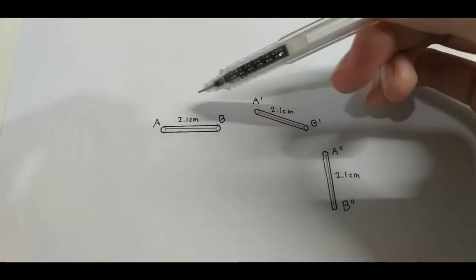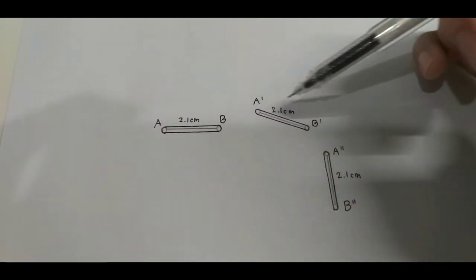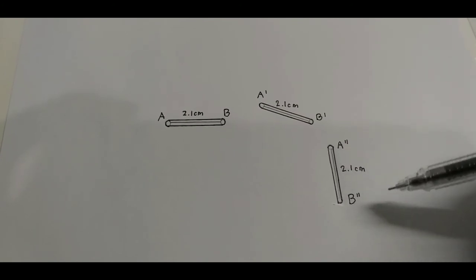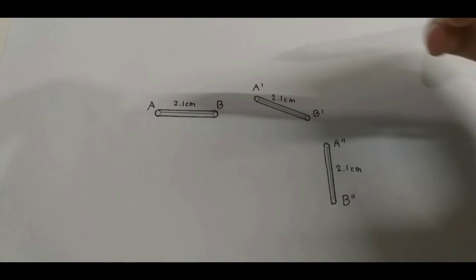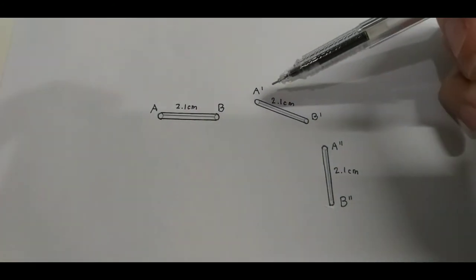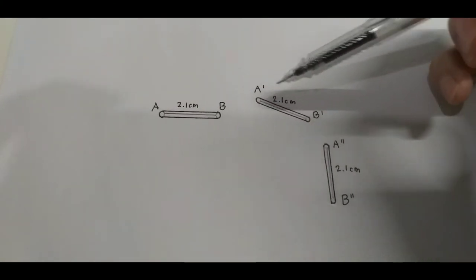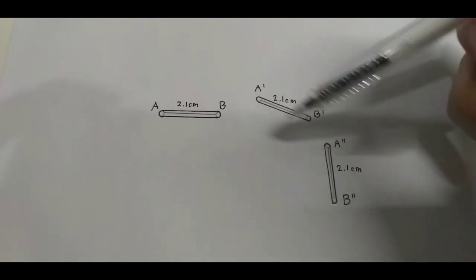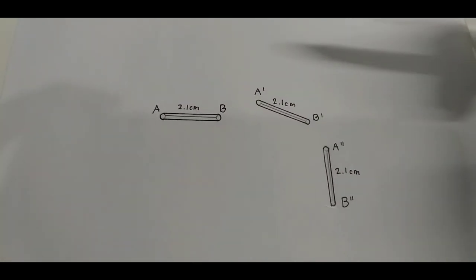Our first position is AB, our second position is A'B' and our third position would be A''B''. The first thing I'm going to do here is connect the first position of A to the second position to the A at the second position and then connect the A at the second position to the A at the third position.